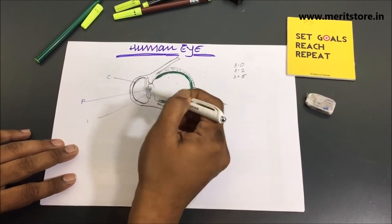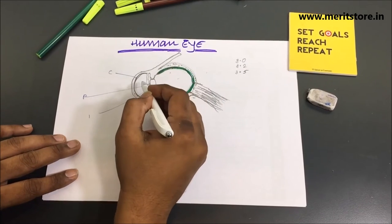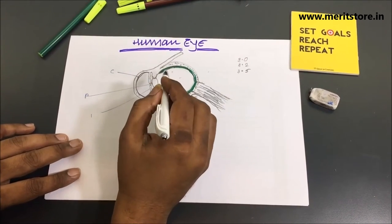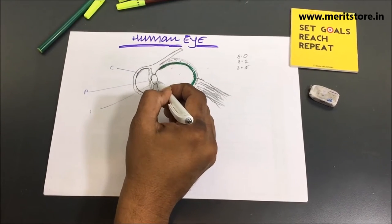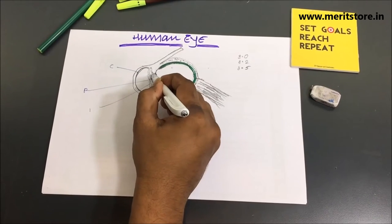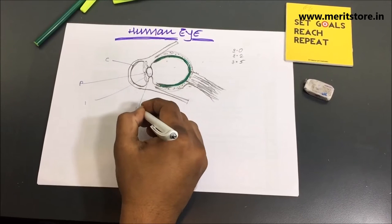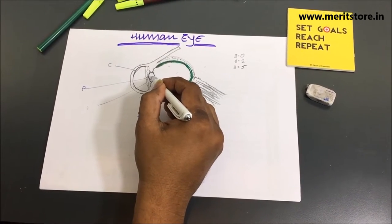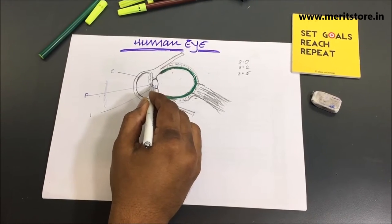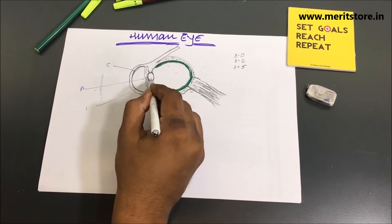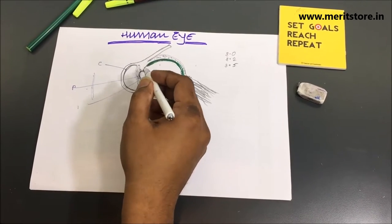The eyeball is spherical in shape with a diameter of approximately 2.3 centimeters. Behind the pupil is a transparent biconvex crystalline body called the lens — convex on both sides. The crystalline lens provides fine adjustment of the focal length, which is like auto focus. You can read something kept nearby or see a star at infinity because the focal length of this lens can adjust itself, forming a real inverted image on the retina.